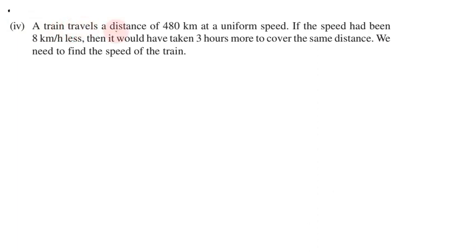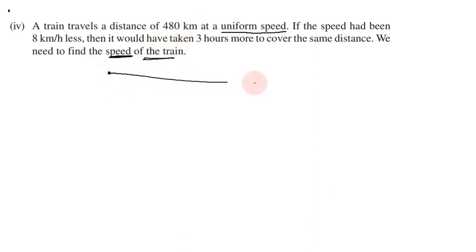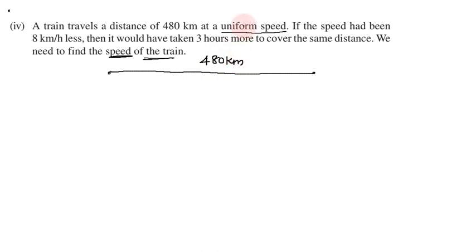Sub-division 4: A train travels a distance of 480 km at uniform speed. If the speed had been 8 km per hour less, it would have taken 3 hours more to cover the same distance. We need to find the speed of the train.